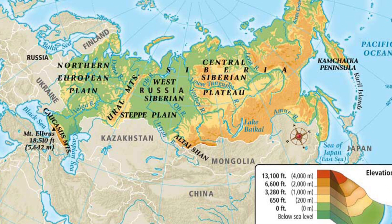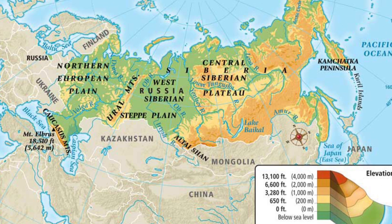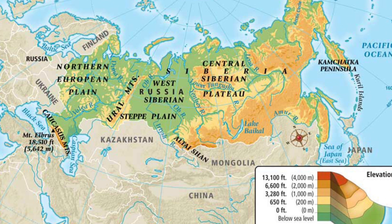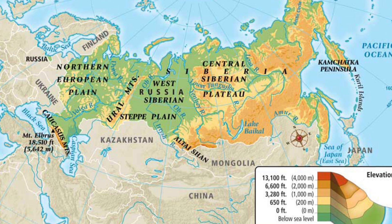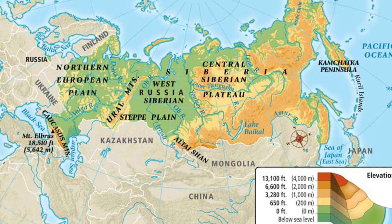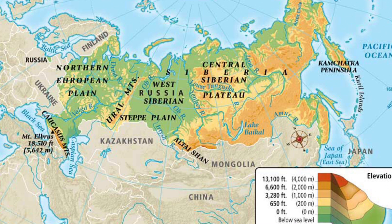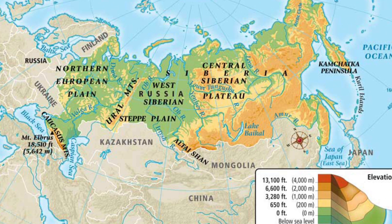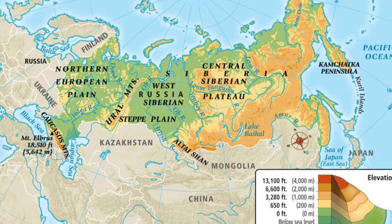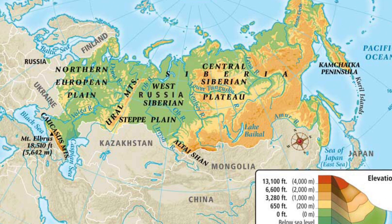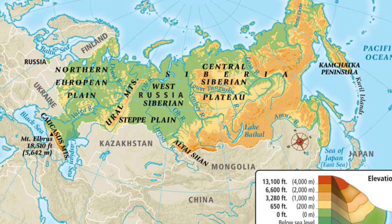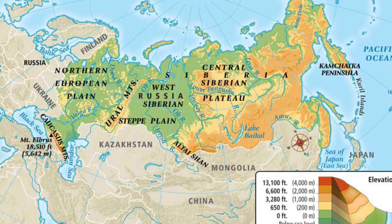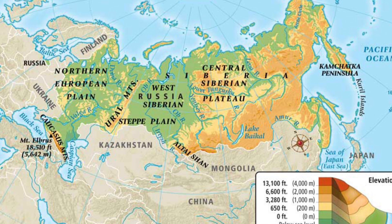Then we have the Caucasus Mountains. The Caucasus Mountains lie between the Black and the Caspian Sea. We've talked about the Caucasus region before, and these are the mountain ranges that separate them from Russia. Then the Central Siberian Plateau — this rugged boundary between Russia and China, although it is flat, is located in Siberia.